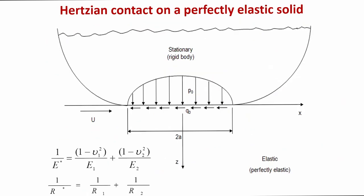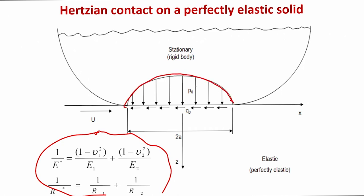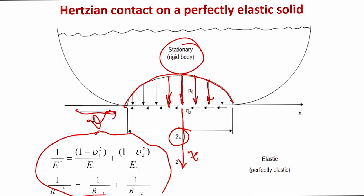These expressions define how to find the effective elastic modulus and the effective radius of the surfaces. This is the case for Hertzian contact on a perfectly elastic solid. A scientist called Hertz first proposed these equations, and on his name we call this Hertzian contact. You can see how the pressure varies across the contact region: 2a is shown here, and this is your traction. The elastic perfectly elastic solid is below and the stationary rigid body is on top, with sliding velocity V creating relative motion between the two solids.